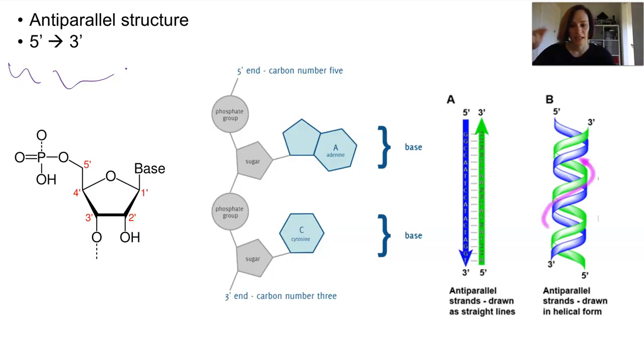The next nucleotide in the sequence will attach via the phosphate molecule bonding to the third carbon on the previous sugar. So this is at the bottom of the long chain and we refer to this as the three prime end and each strand runs in opposite directions.